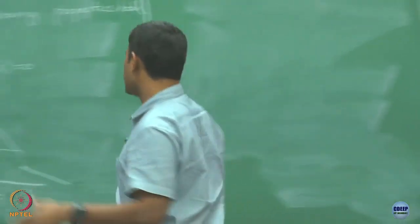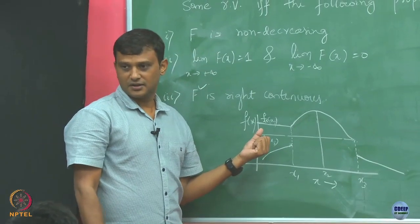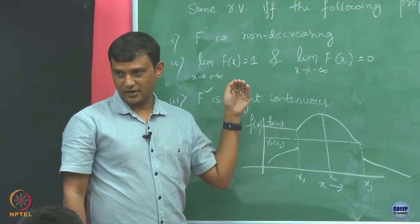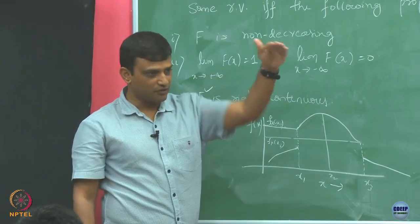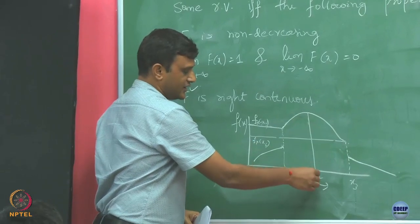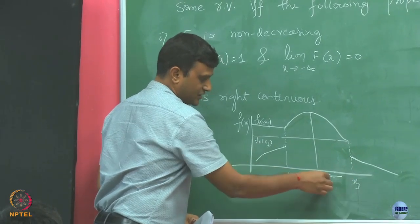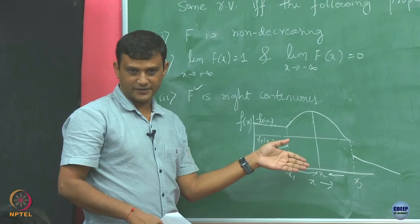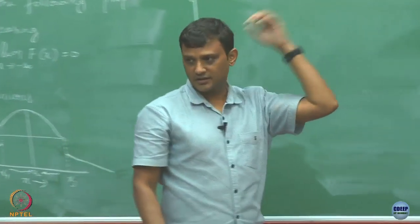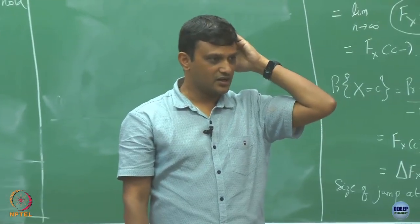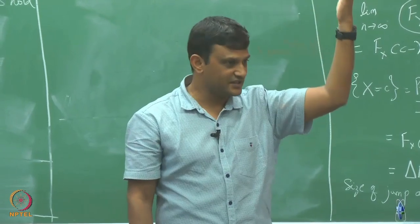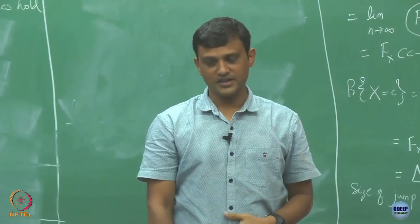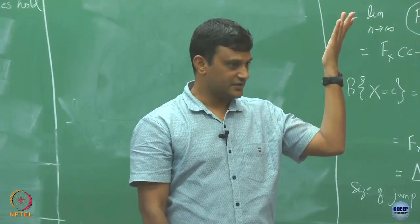When we defined continuity in one dimension, we defined it on points, and our definition included right continuity, left continuity, and so on. To define right and left continuity, we had a sequence of points. But if we want to define continuity of probability, we need a similar notion of convergence, but defined on sets, because probability itself is defined on sets. So what is the notion of convergence for sets?